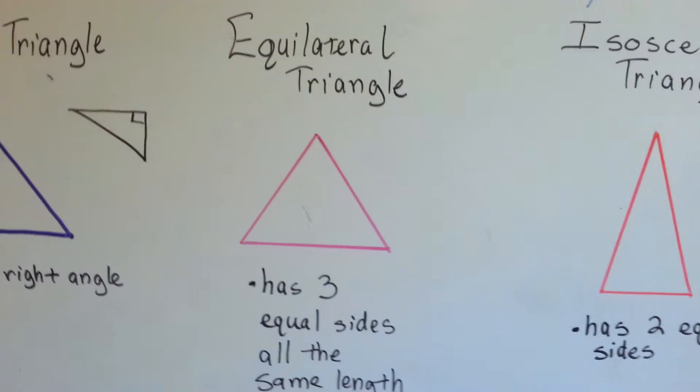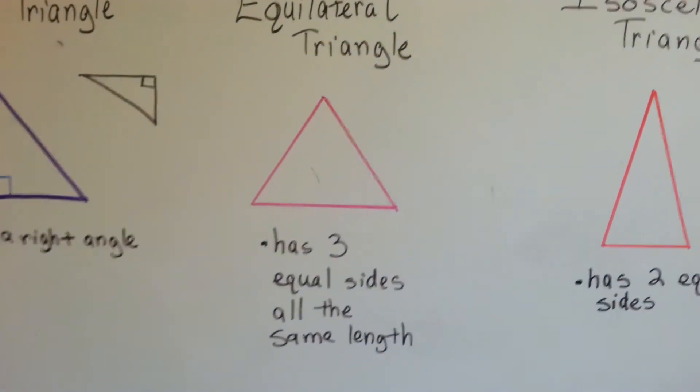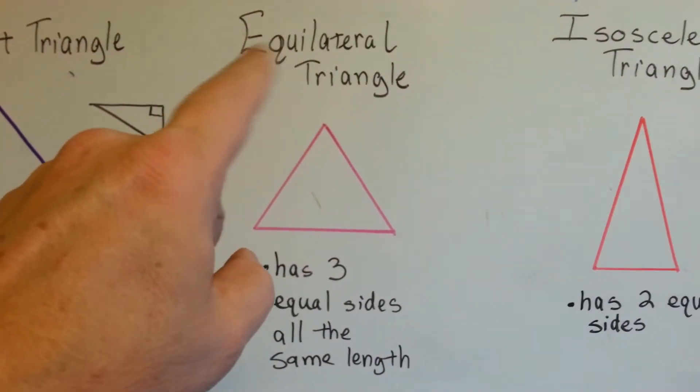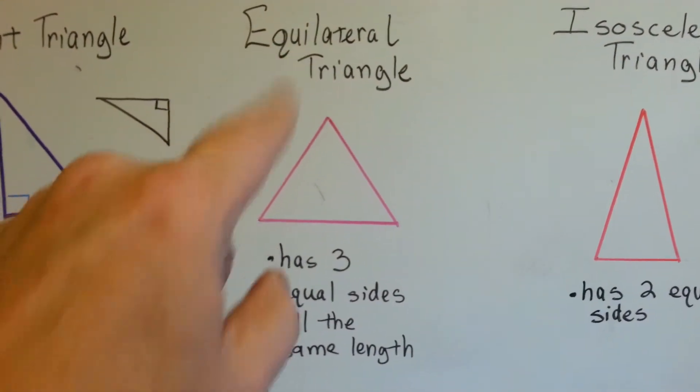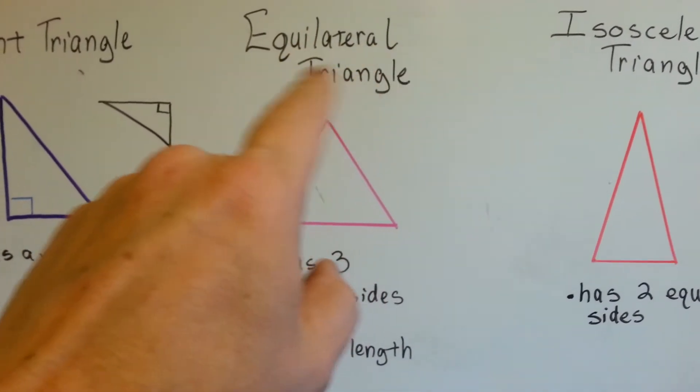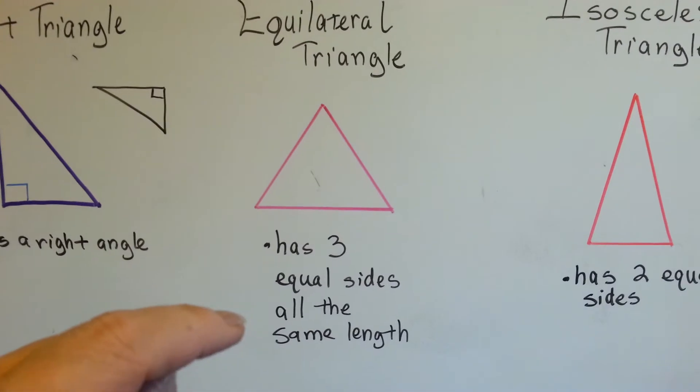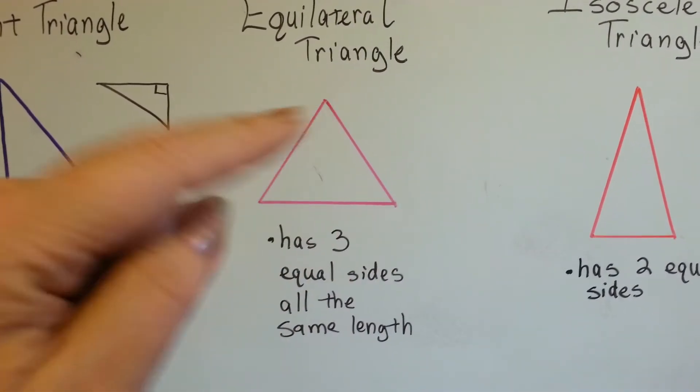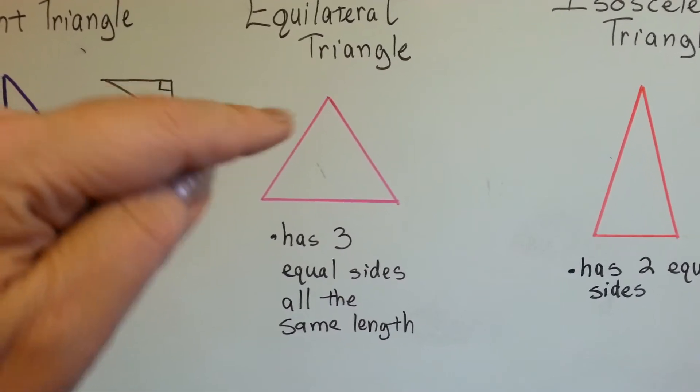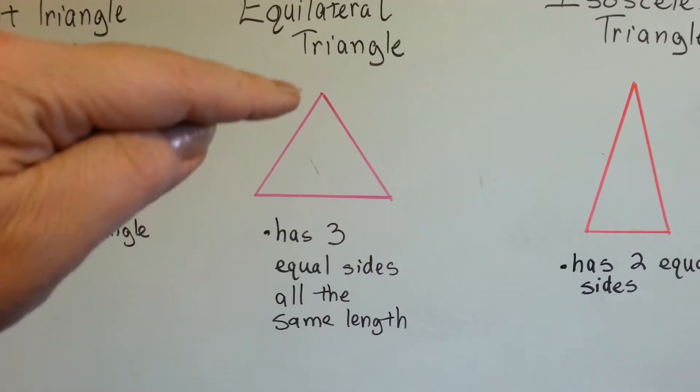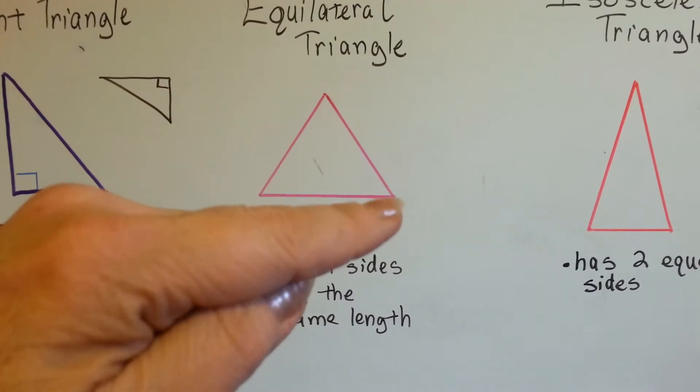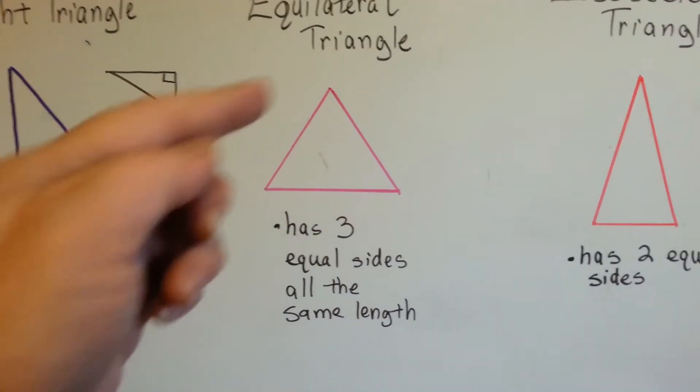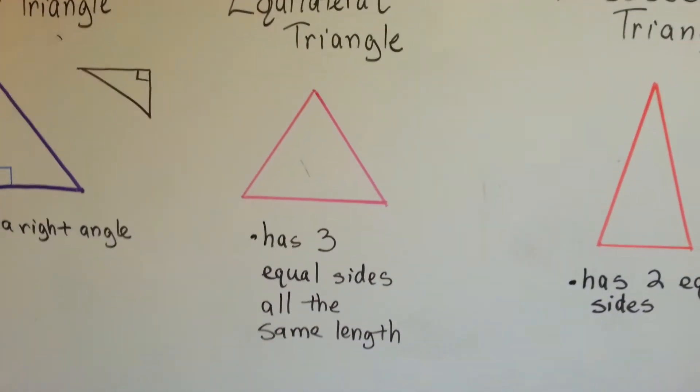The second one is the equilateral triangle. Equal is the prefix for same, equal. And lateral means lines, so it's got equal lines. It has three equal sides that are all the same length. If this side is six inches, then so is this one and so is this one. Or if it's one foot, then this one's one foot and this one's one foot. All three sides are the same, equal length.